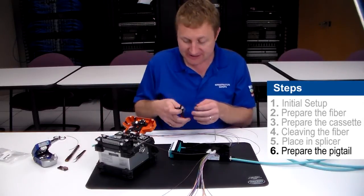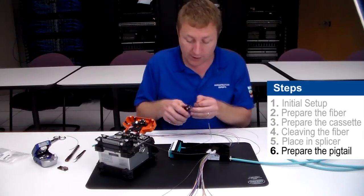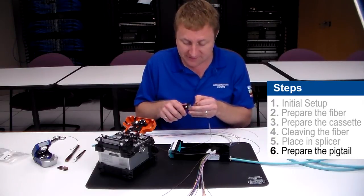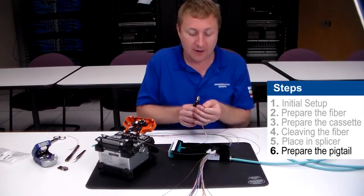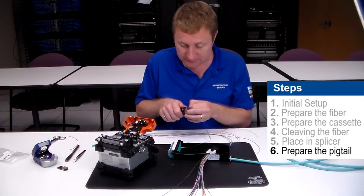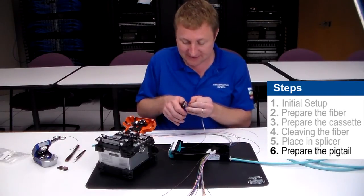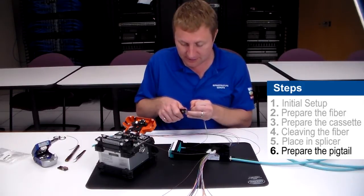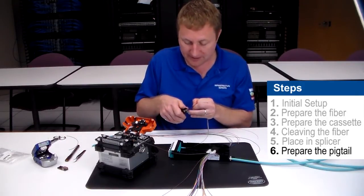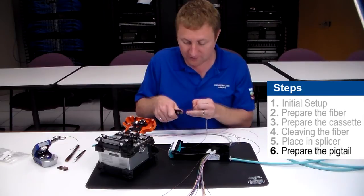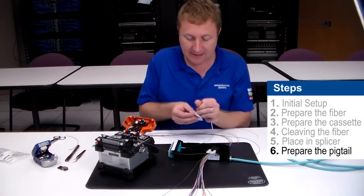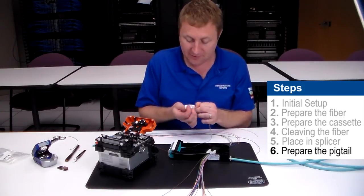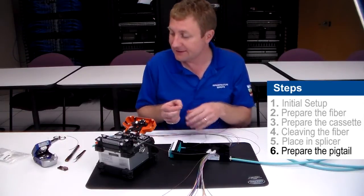From here I can now prepare my fiber just as I did on the other side. I'm going to want to remove about three quarters of an inch of the buffer. I'm going to take very small sections, little nips at a time just so we don't break the fiber. Then I'm going to use the small hole on my stripper and I'm going to remove that primary coating. Again following up with a cleaning, making sure I remove any residue and that it is squeaky clean.